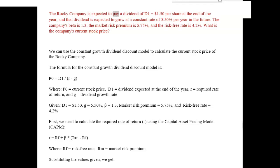The Rocky Company is expected to pay a dividend of D1 equals $1.50 per share at the end of the year, and that dividend is expected to grow at a constant rate of 5.5% per year in the future. The company's beta is 1.3, the market risk premium is 5.75%, and the risk-free rate is 4.2%. What is the company's current stock price?